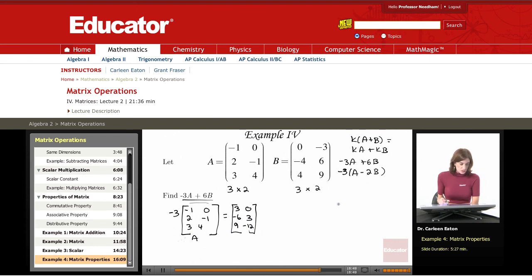Now, what I also need to do is find 6B. So here I have negative 3A. I need to find 6B.